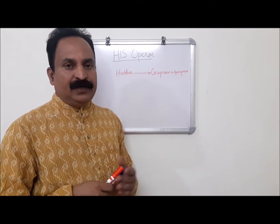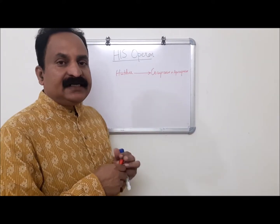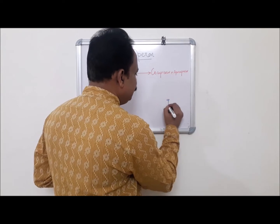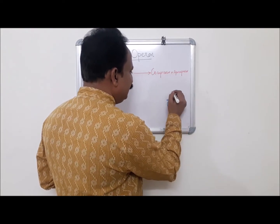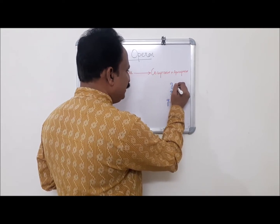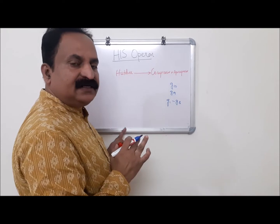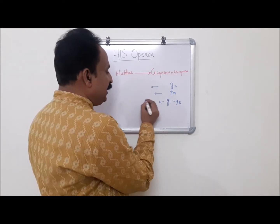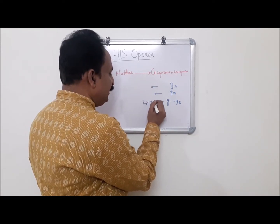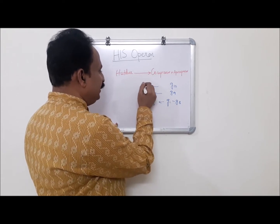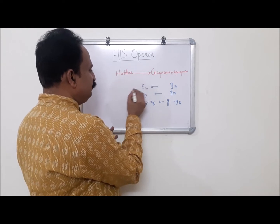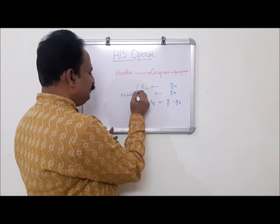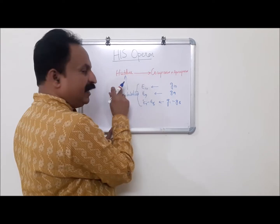Let us see the Histidine operon in detail. Histidine is the amino acid which is synthesized by 8 genes, G1 to G8, here gene 9 and gene 10. These are the structural genes responsible for the production of the amino acid histidine. These genes produce the enzymes E1 to E8, here E9 and enzyme E10. These enzymes all produce 10 metabolites and these metabolites join and give the amino acid histidine.